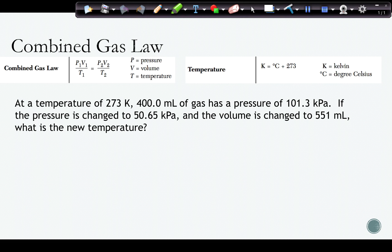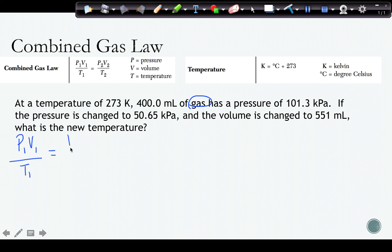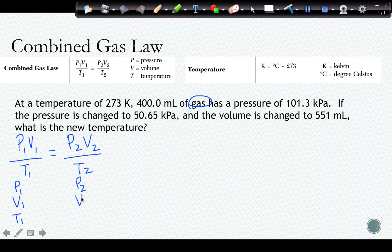If we have a question that says at a temperature of 273 kelvins, 400 milliliters of gas has a pressure of 101.3 kilopascals. If the pressure is changed to 50.65 kilopascals and the volume is changed to 551 milliliters, what is the new temperature? I see a bunch of temperatures, volumes, and pressures, and they mentioned a gas. So I'm going to write out my formula: P1V1 over T1 equals P2V2 over T2.